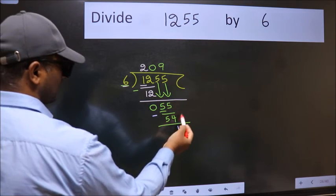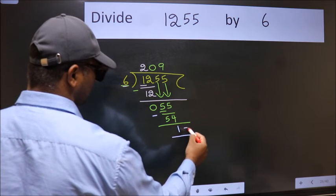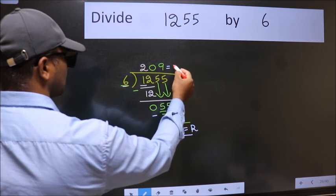No more numbers to bring it down. So we stop here. This is our remainder and this is our quotient.